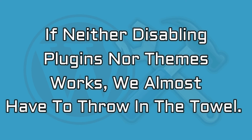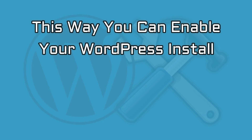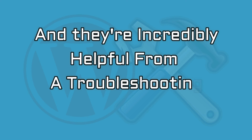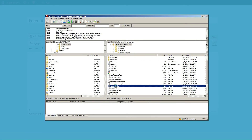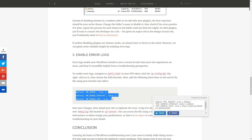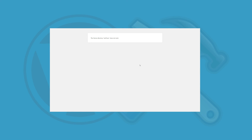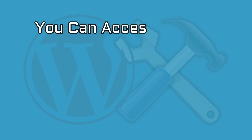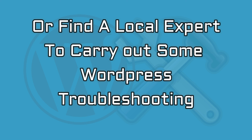If neither disabling plugins nor themes works, we can glean some valuable insight by enabling error logs. This way, you can enable your WordPress install to save a record of each time your site experiences an issue, and they are incredibly helpful from a troubleshooting perspective. To enable error logs, navigate to public_html in your FTP client, find the wp-config.php file, right-click on it, then choose the edit function. Next, add the following three lines to the end of the file using your favorite text editor. Save your changes, then reload your site to replicate the error. A log of it should appear within the new debug.log file located in wp-content. You can access the file using a text editor and use the information to either search for your issue online or find a local expert to carry out some WordPress troubleshooting on your behalf.